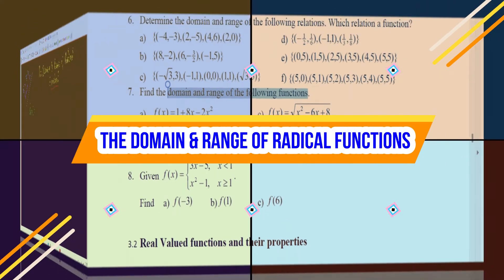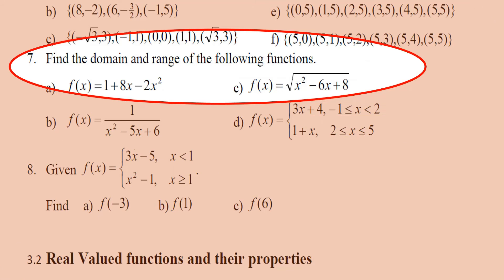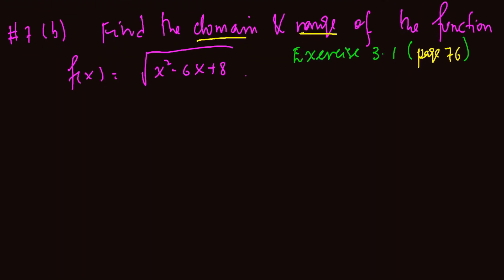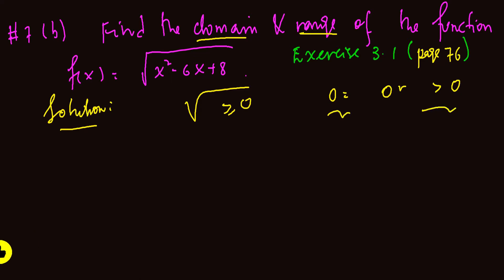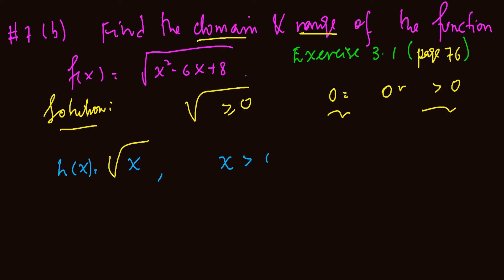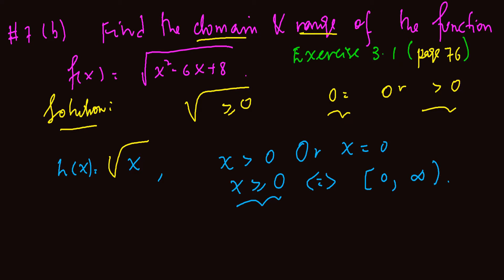Let's find the domain and range of these functions. Question number 7 part C. F of x is equal to the square root of x squared minus 6x plus 8. Here it is given in the form of a square root. A square root requires the expression inside to be 0 or greater than 0. For the simplest square root function h of x equals square root of x, the domain is all numbers greater or equal to 0, which is the interval from 0 to infinity.